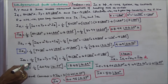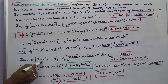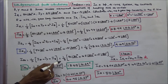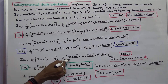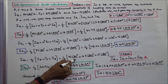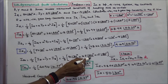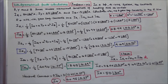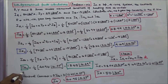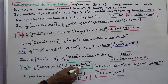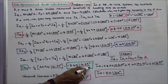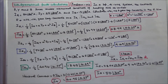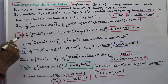The zero sequence current IR0 is equal to 1/3 into (IR + IY + IB). That is equal to 1/3 into [50 angle 30 degrees + 25 angle 300 degrees + 15 angle 180 degrees]. Zero sequence current IR0 is equal to 13.65 angle 4.69 degrees.